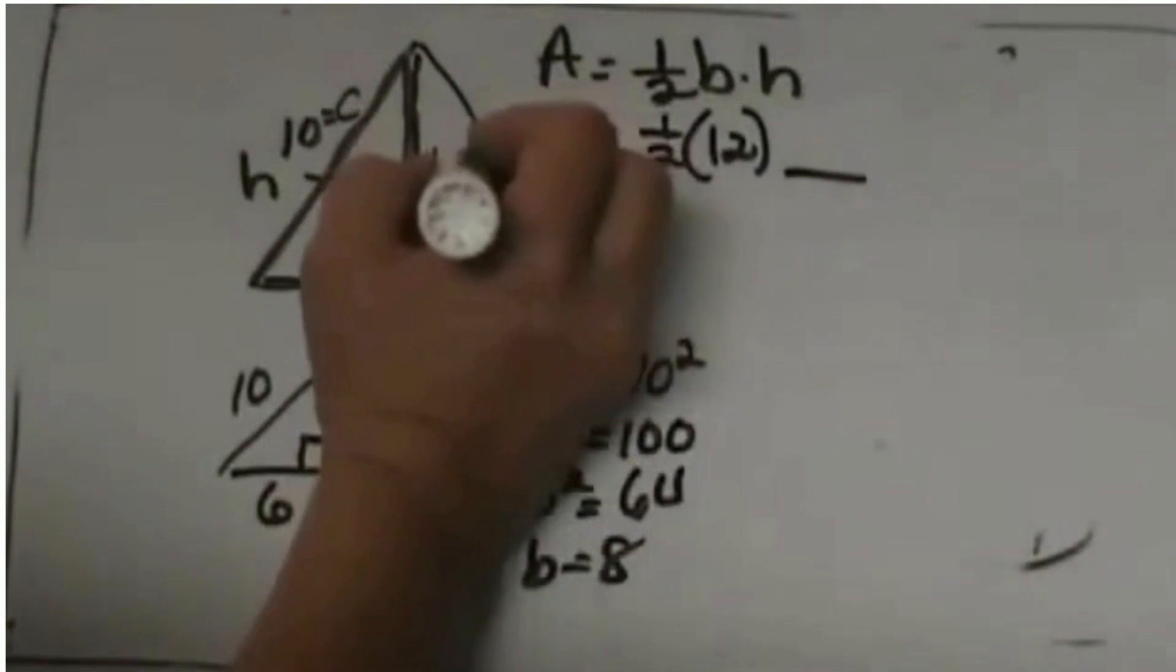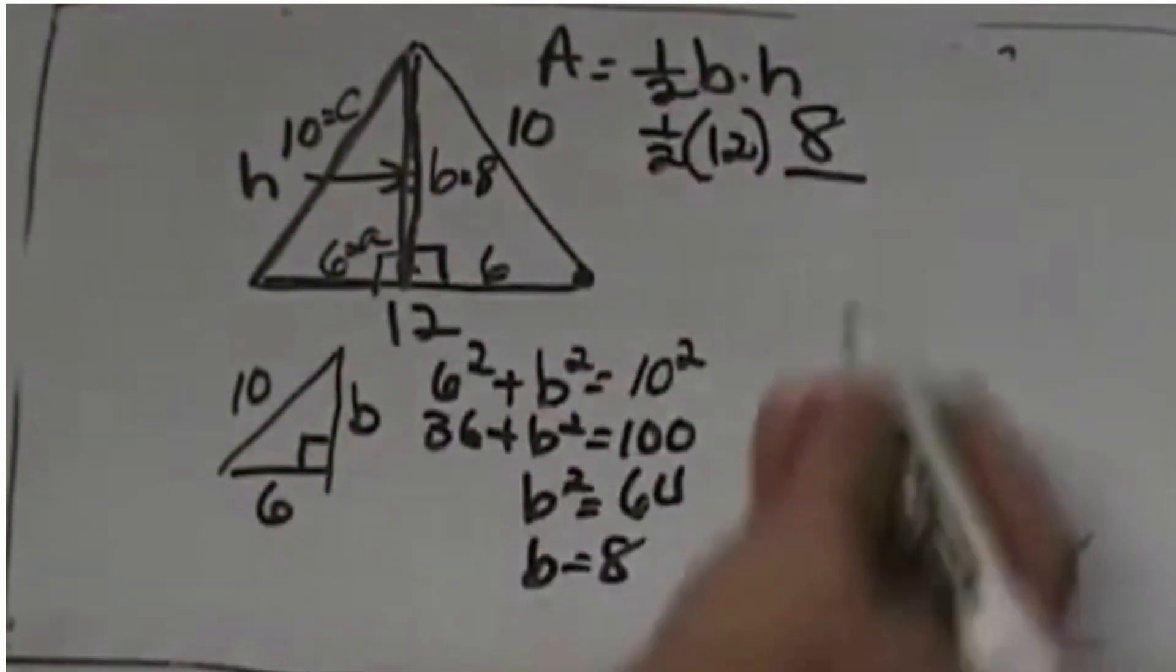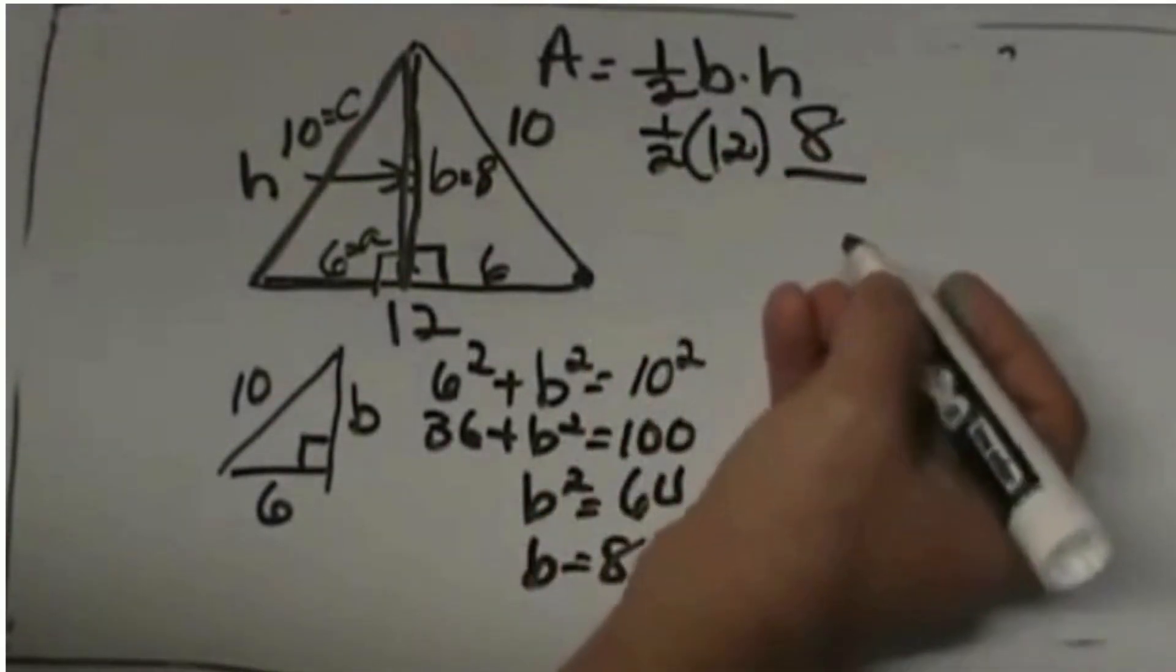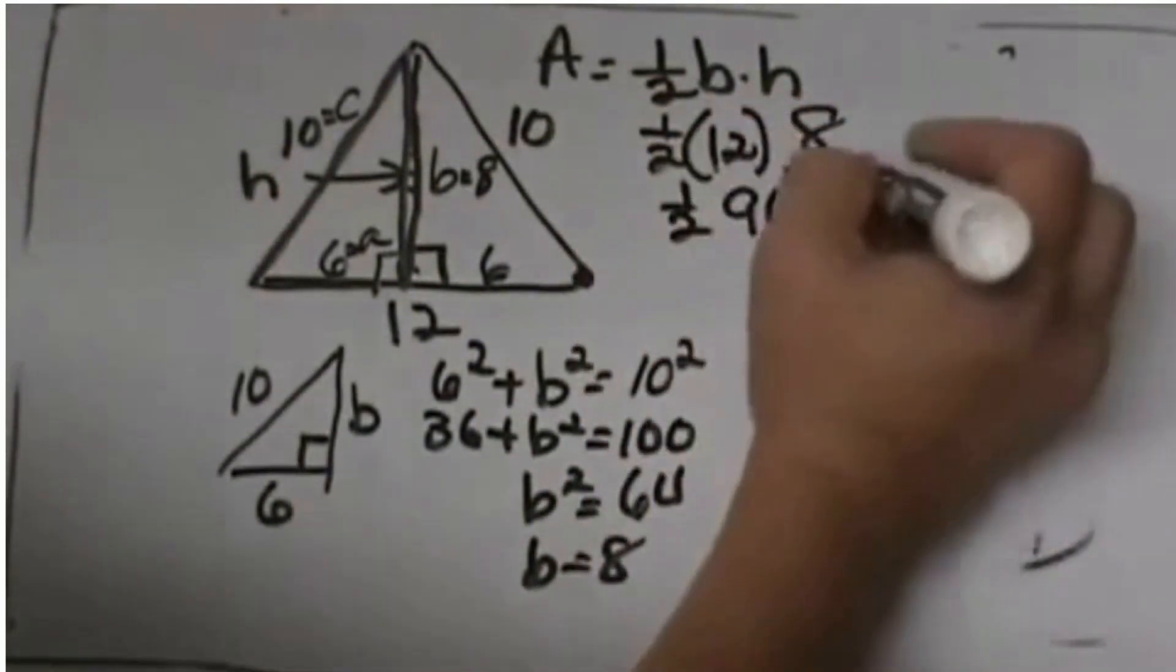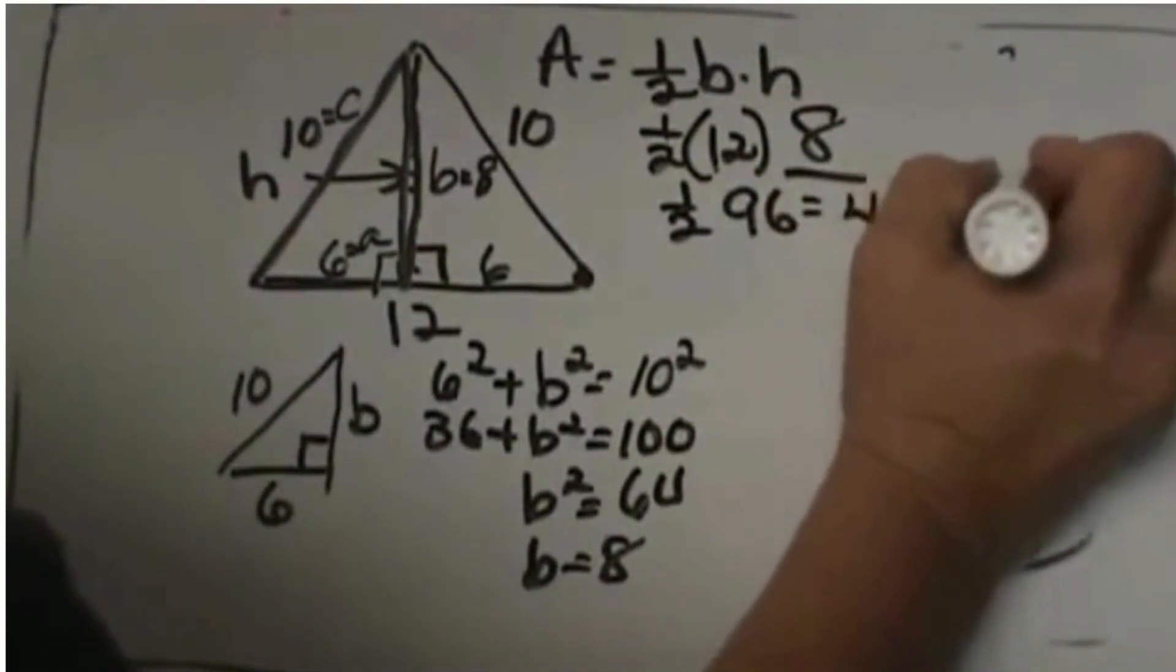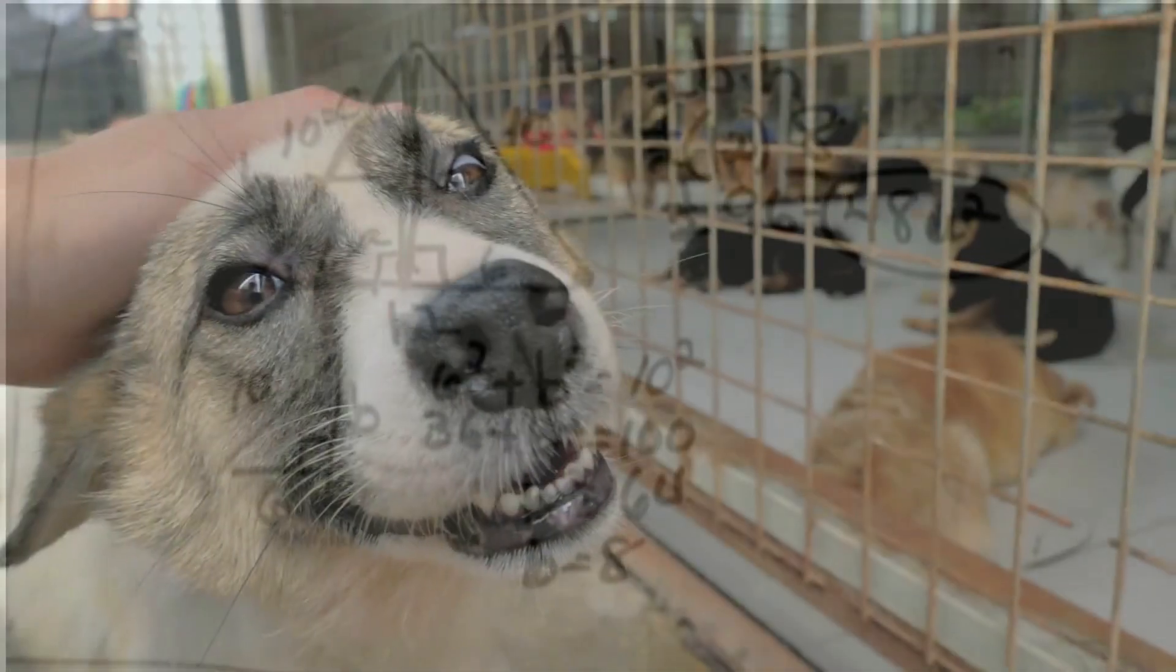So now I can go up here and plug in 8 for my height. So 12 times 8 is 96 and half of 96 is 48. So that is going to be 48 square units for the area of that isosceles triangle.